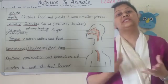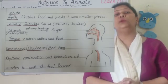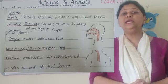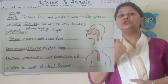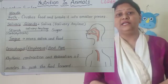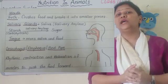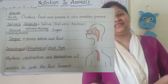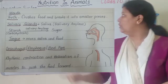Starch is a form of carbohydrate. Now coming to tongue — tongue ka kya use hai? Wo mix karta hai saliva ko food se.